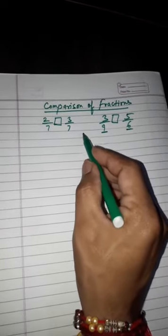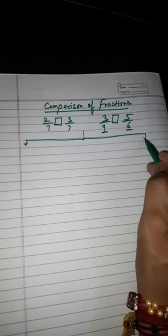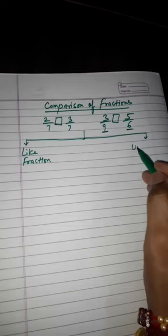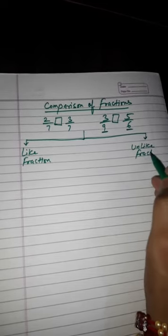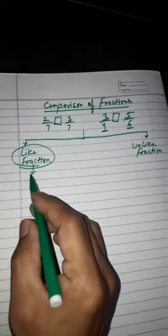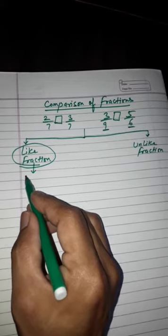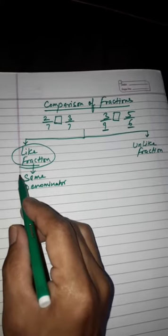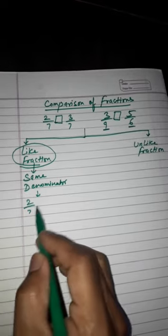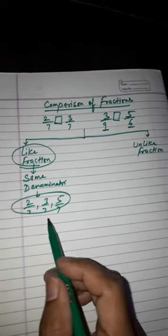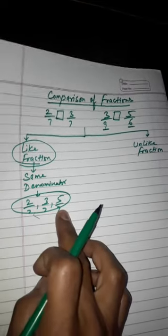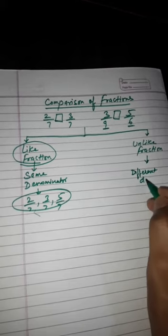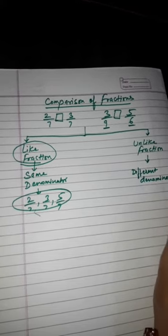For this, we have two types of fractions. First is like fractions, and the other is unlike fractions. Like fractions are those which have equal or same denominators. When two or more fractions have the same denominator, they are called like fractions. For example: two upon seven, three upon seven, five upon seven.